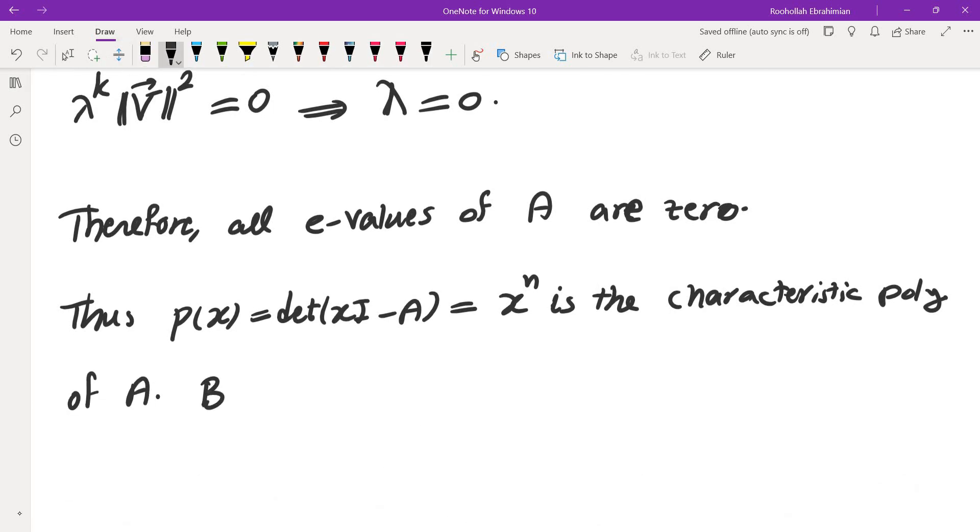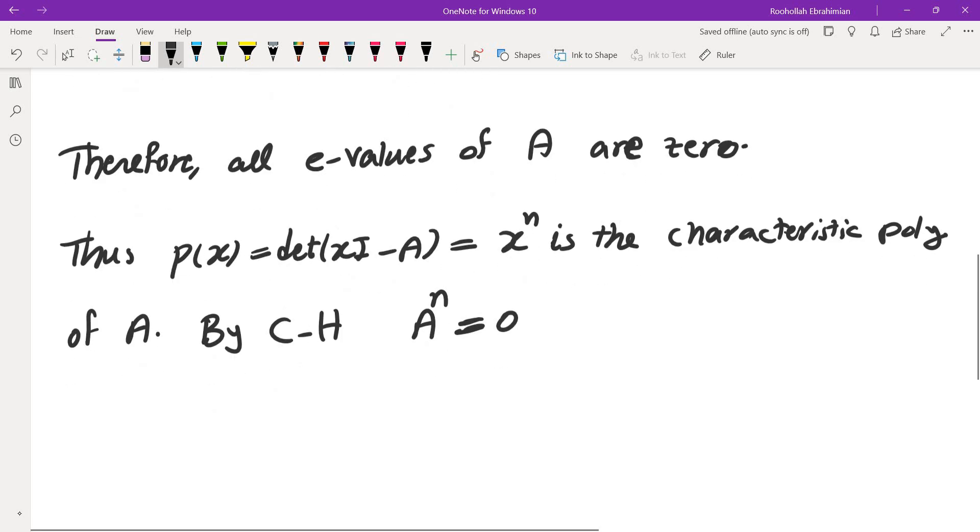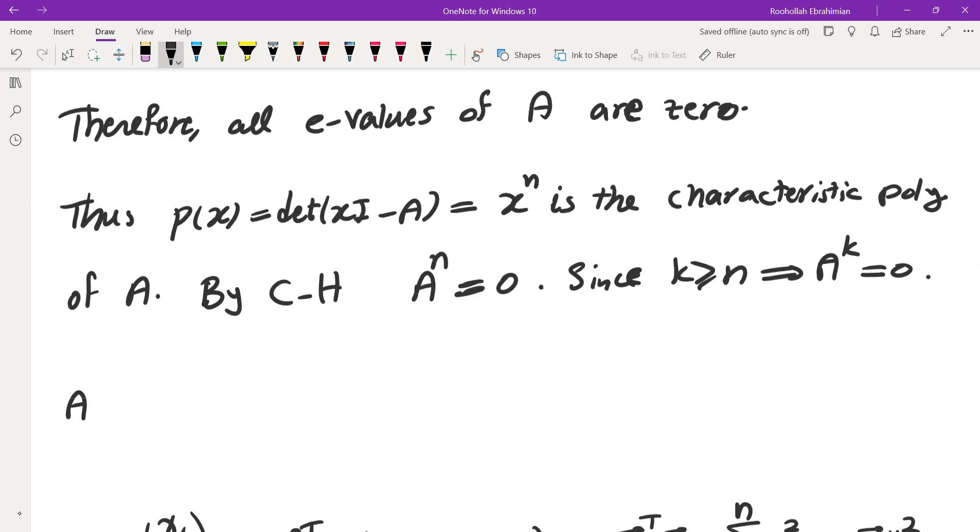By Cayley-Hamilton, A to the power of N becomes zero because if you plug in the matrix into its characteristic polynomial, you end up getting zero. But K is more than N or equal to N. That means A to the power of K is zero. So we're going to take that and plug it back into the original equality. A plus A to the K is equal to A transpose. This is given.